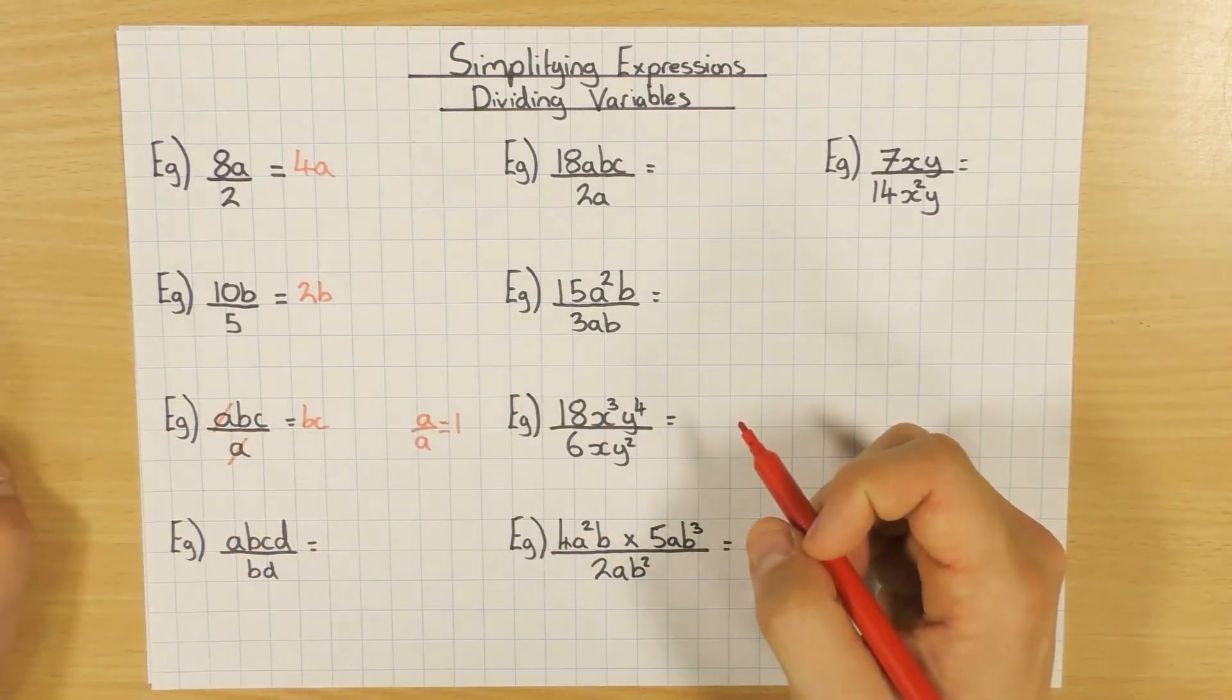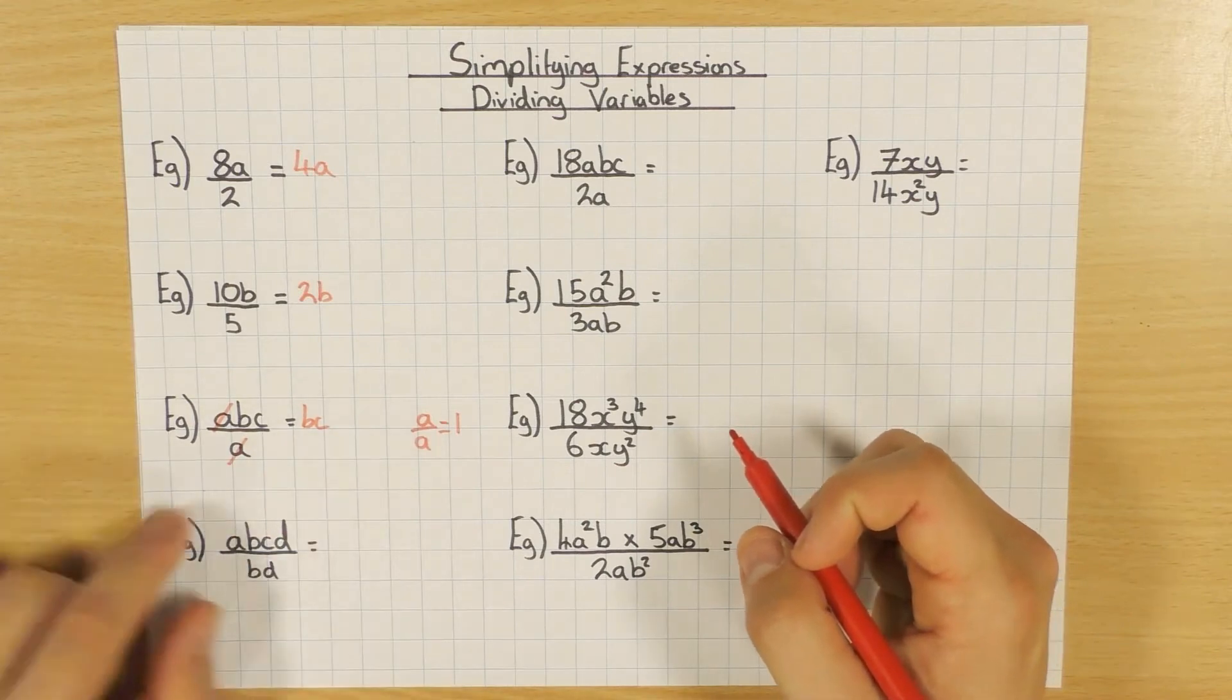All you can do as a quick one is just cancel them off, and then just write down what's left. In this case, it's bc.